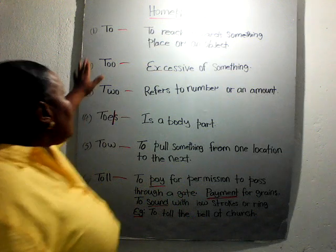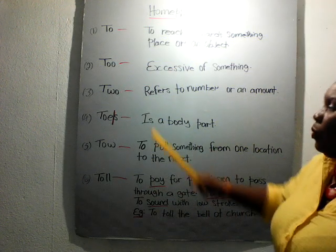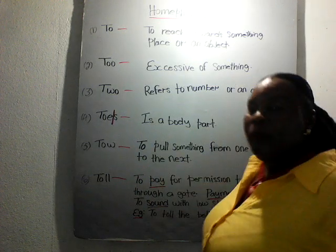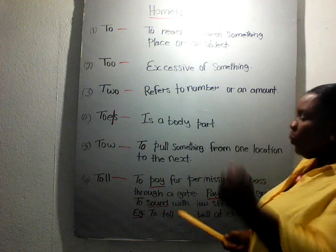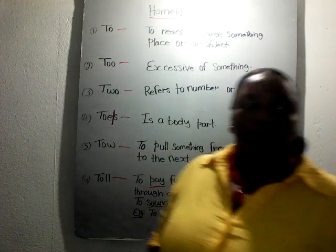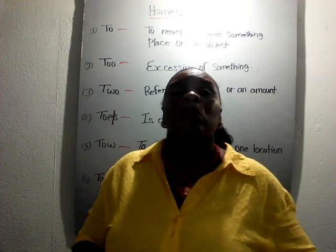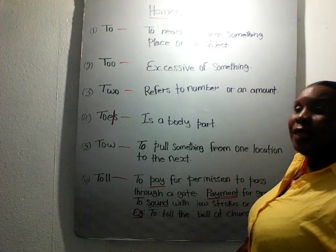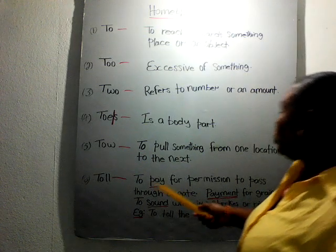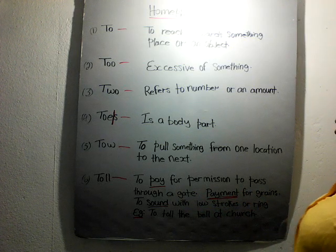So to summarize: 'to' means to reach towards something; 'too' means excessive; 'two' is a number; 'toe' is a body part; 'tow' is to drag something from one location to the next; and 'toll' is to ring a bell as a form of communication, to pay for permission to pass through a gate, or to pay for grains.